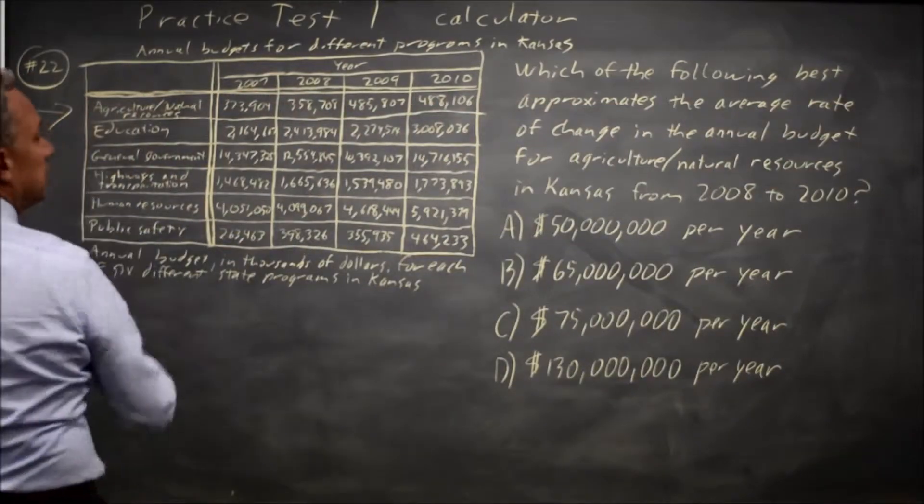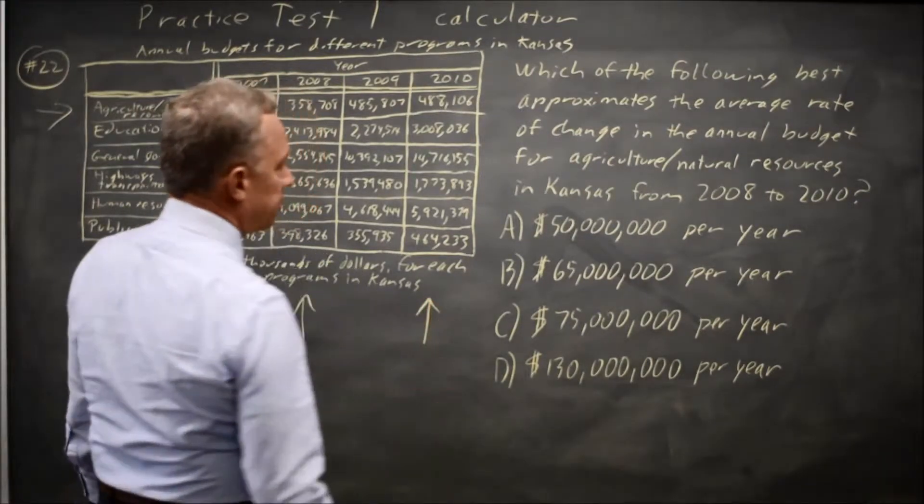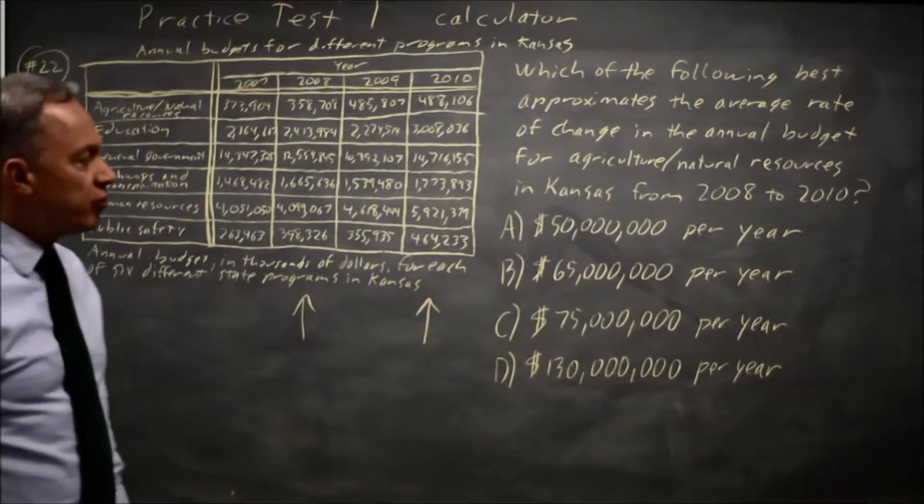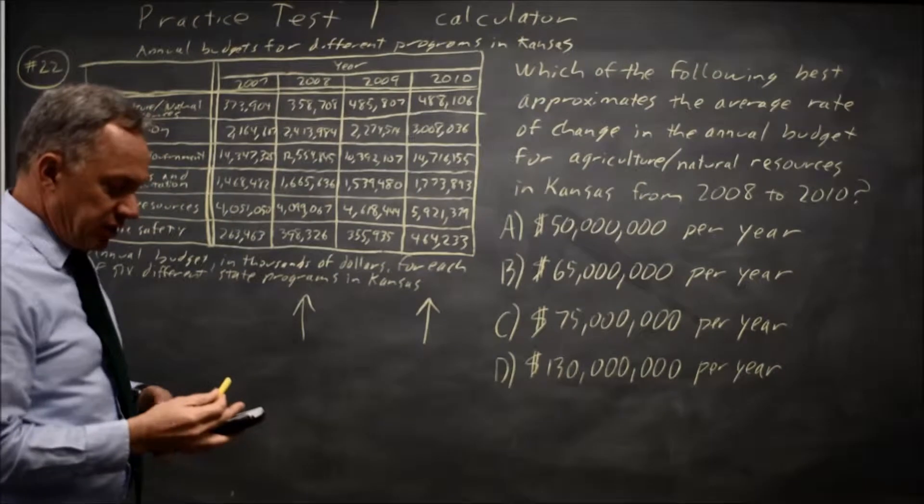This is the first row from 2008 to 2010. That's this column to that column and we have four choices, so I'm going to take the difference between 2010